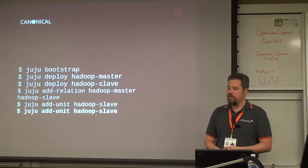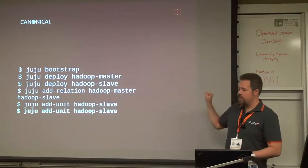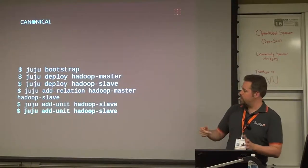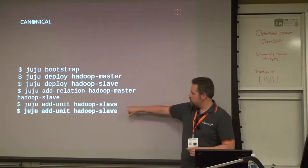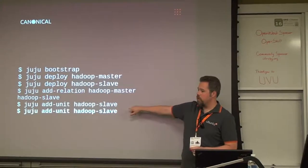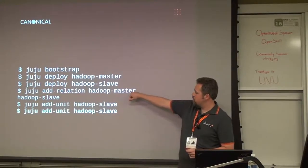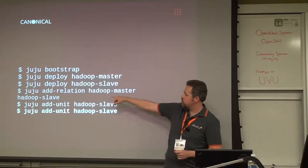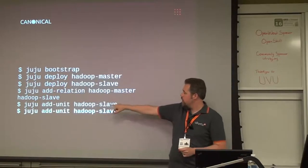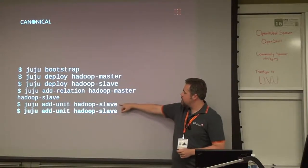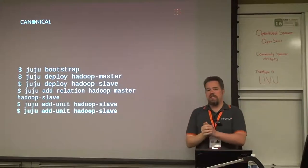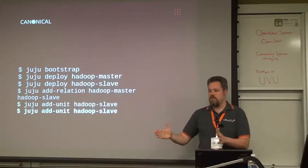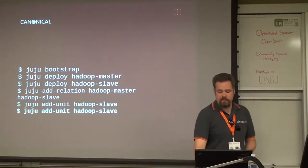If you wanted to add 10, you could do dash N 10 and scale out 10. What Juju will do is, as these new units come on board, it sees the relationship between the master and the slave, and it will simply add these as part of that relationship so that the scaling happens seamlessly. You don't have to go back and rerun that command.